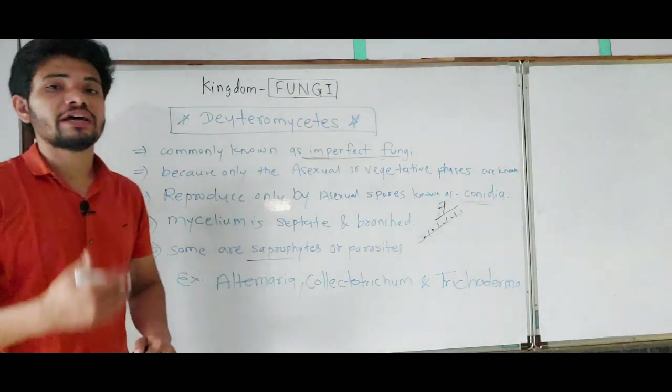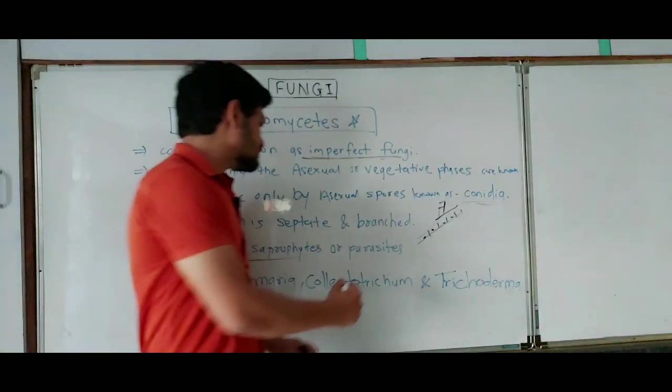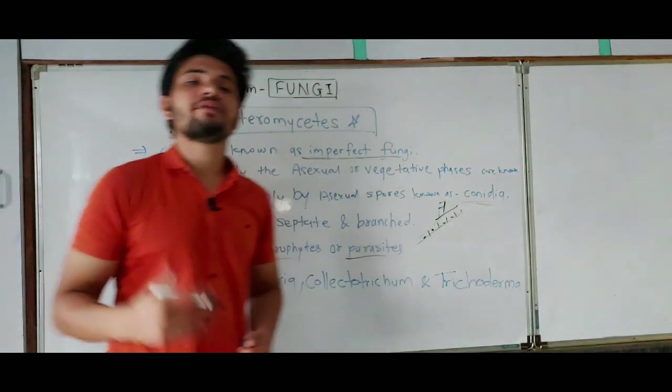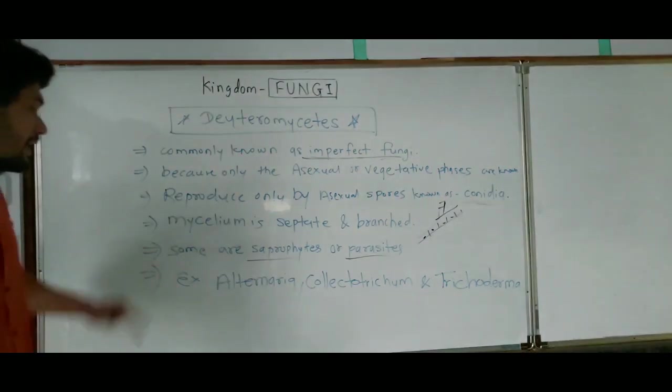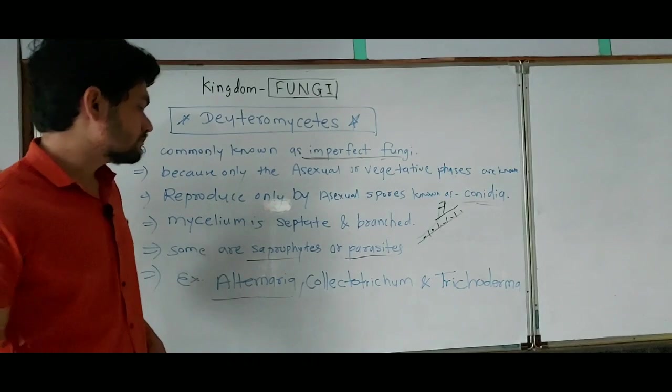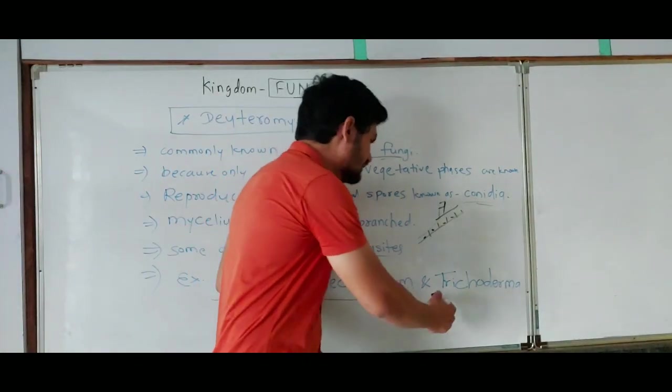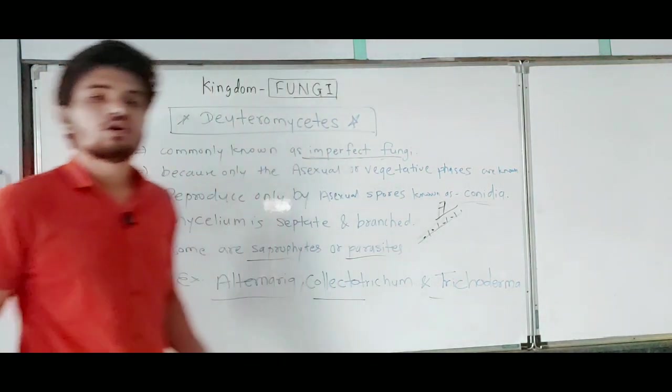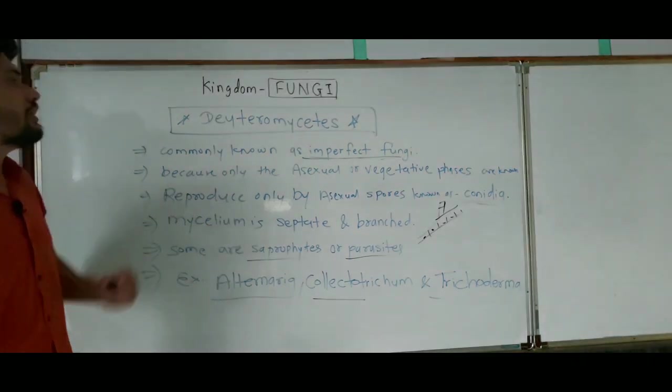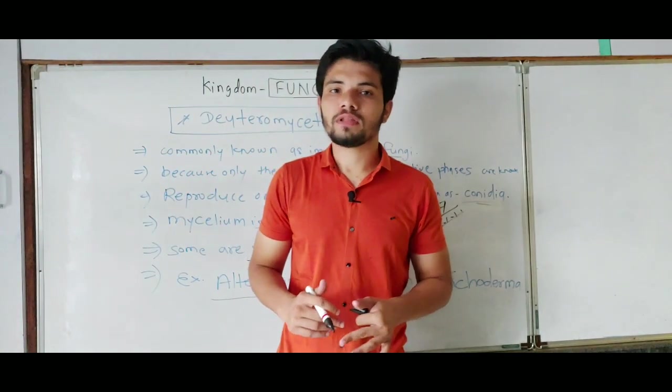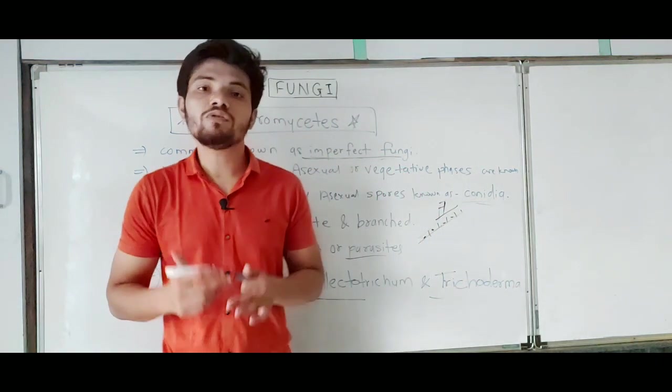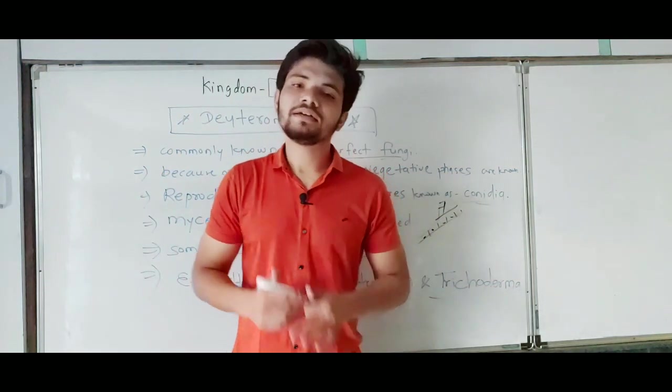Some are parasitic, which means they cause diseases. Examples are Alternaria, Colletotrichum, and Trichoderma. This was all about Deuteromycetes. We have completed Kingdom Fungi. In the next few lectures we will discuss viruses. Thank you so much!